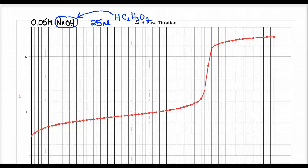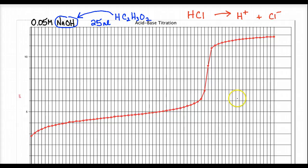We're going to have stoichiometry involved in our titrations. We're also going to have equilibrium pop up. Unlike our first titration — strong acid, strong base — we're going to have some equilibrium-type solutions because we're going to have the ability of the conjugate base to go backwards. When we dealt with hydrochloric acid, the conjugate base produced was the chloride ion, which has no ability to reform the acid. This is a one-way reaction that goes to completion.